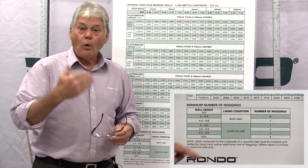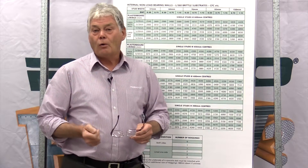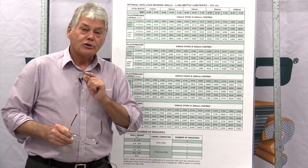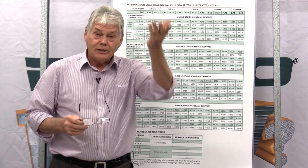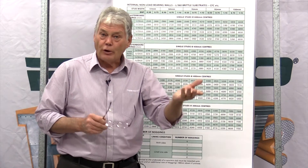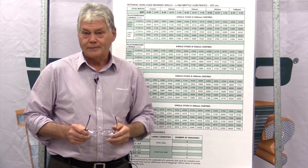We always recommend you should call a Rondo technical representative — we're happy to help you. When you install your nogging tracks, make sure they're equally spaced. For example, if you have one nogging track, put it in the centre or equidistant. Two nogging tracks, equally distribute them.